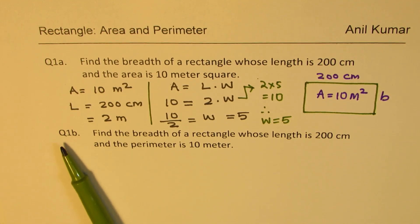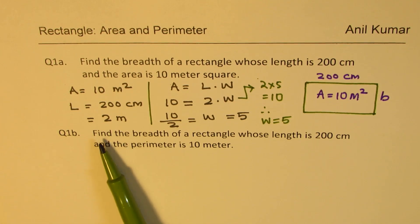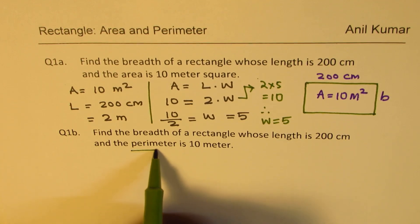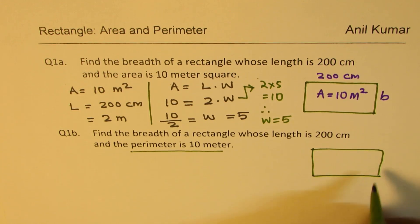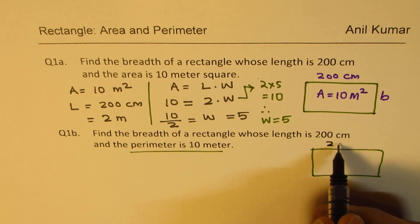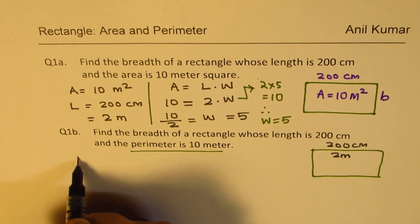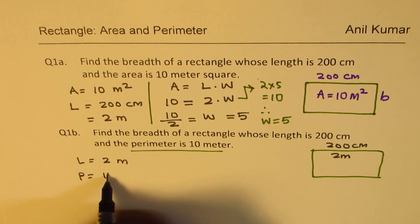Now let's look at question 1B, which is a variation of the same thing. It says: find the breadth of a rectangle whose length is 200 centimeters and the perimeter is 10 meters. I've changed this question a bit - we just wrote perimeter. Again, let's look at this same rectangle. We have our length of 200 centimeters, which we'll write as 2 meters. We know length is 2 meters and the perimeter is 10 meters.